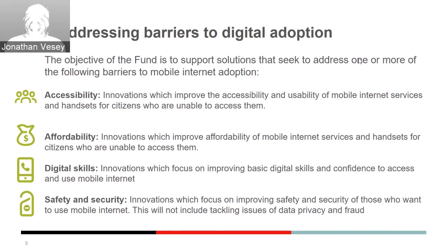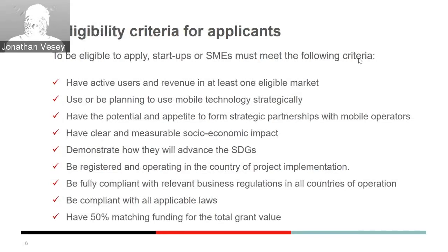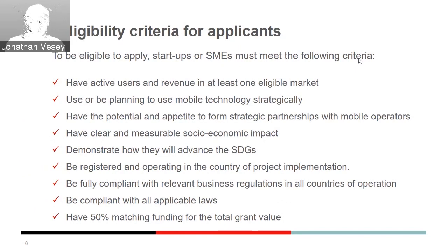Moving to the eligibility criteria for applicants — there is a terms and conditions document available to download on our hosting website. Key criteria include: you must have active users and proven revenues in at least one eligible low-to-middle income market, listed in the terms and conditions document. You must show how you plan to use mobile technology as a strategic driver for your proposition. This must be driving mobile internet usage — not other technologies such as Wi-Fi or laptops. It must be focused on mobile internet technology.